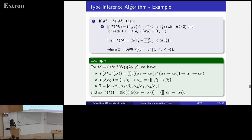As an example, applying two to the identity gives a more general type than before. The first component of the intersection corresponds to the type at the first occurrence of f, and the second to the second occurrence. The unification problem reduces to equating the inferred type of m2 with each component of the intersection in the type of m1, and applying Robinson's unification gives us the resulting substitution and final type.